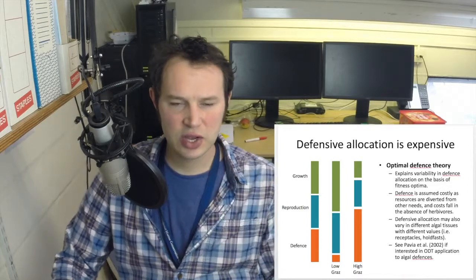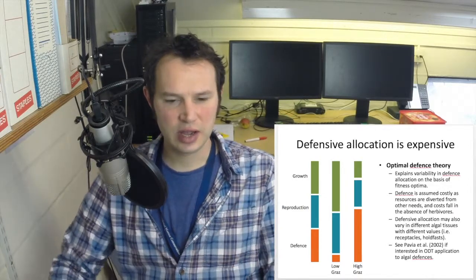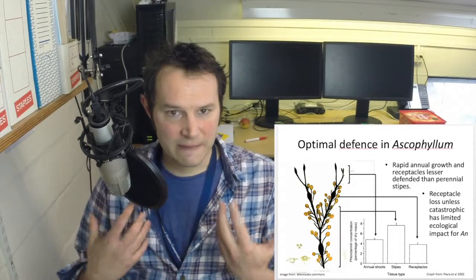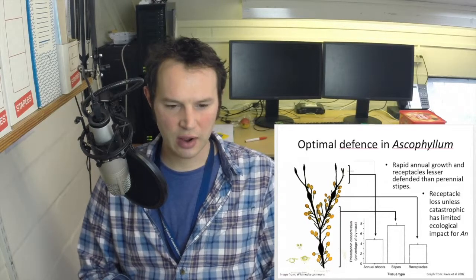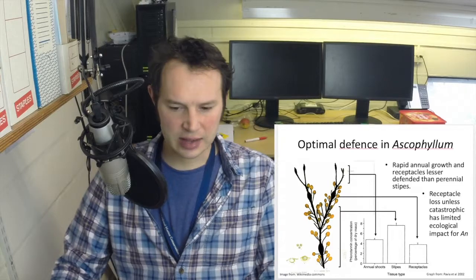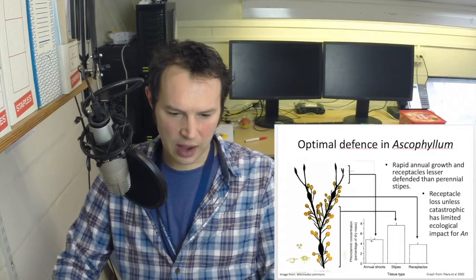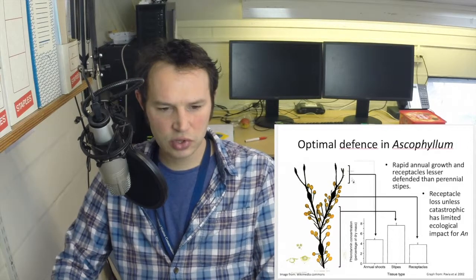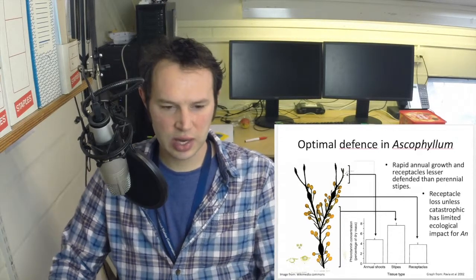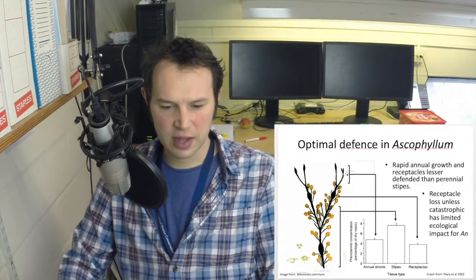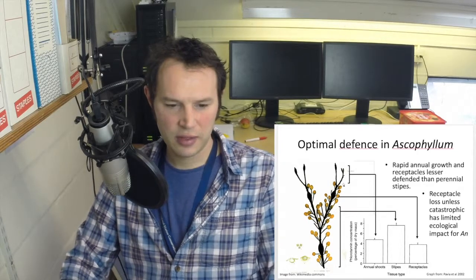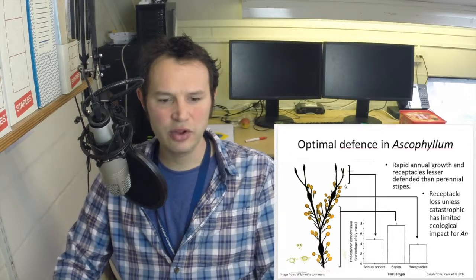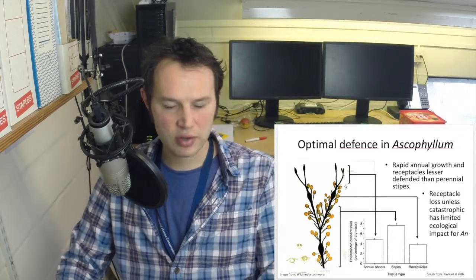Optimal defense indicates that species will allocate their energetic reserves into tissues that are higher value and defense in particular will be concentrated in those tissues that are of higher value. Here we have an example from Pavia et al. 2002 and we're looking at a study that focused on the alga Ascophyllum nodosum. We see that the defensive allocation differs for different tissues throughout the alga. Annual shoots, which are these parts here that are grown every year in some abundance, have fairly low levels of defense. Receptacles too, and as you can see from this example, there are lots of receptacles on there. Even though they have a high value for the alga, losing a few of these is not going to catastrophically have an effect on the survivorship of the next generation of Ascophyllum.